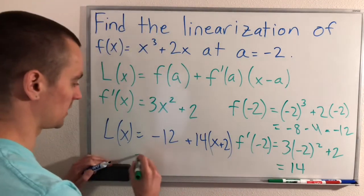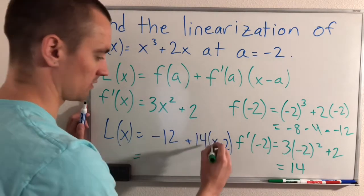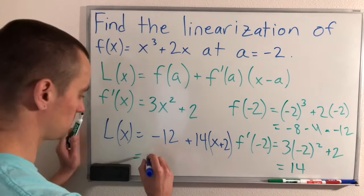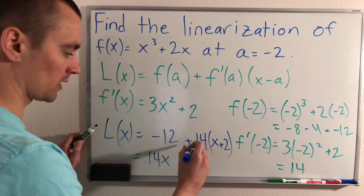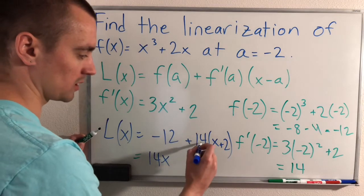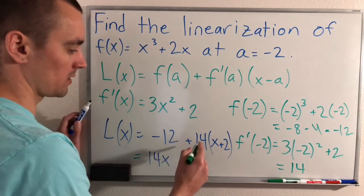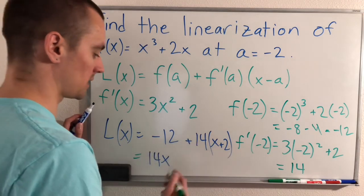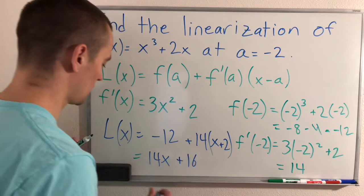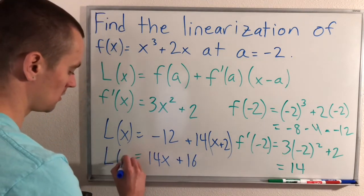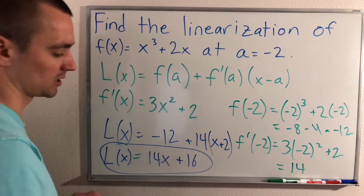And then we can just simplify this by distributing our 14 and then combining like terms. So doing that will give us 14x. And then we're going to have minus 12 plus 28 from distributing the 14 into the 2. And so that leaves us with 28 minus 12, which is plus 16. So this will give us our linearization of our function, 14x plus 16.